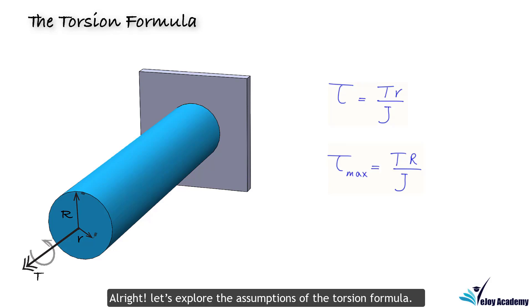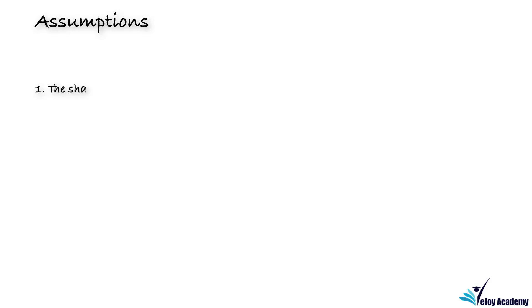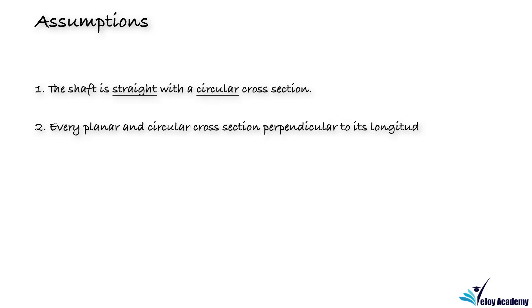All right, let's explore the assumptions of the torsion formula. Here we have the important assumptions to derive the torsion formula. One, the shaft is straight with a circular cross section. Two, every planar and circular cross section perpendicular to its longitudinal axis remains planar and circular after the twist.